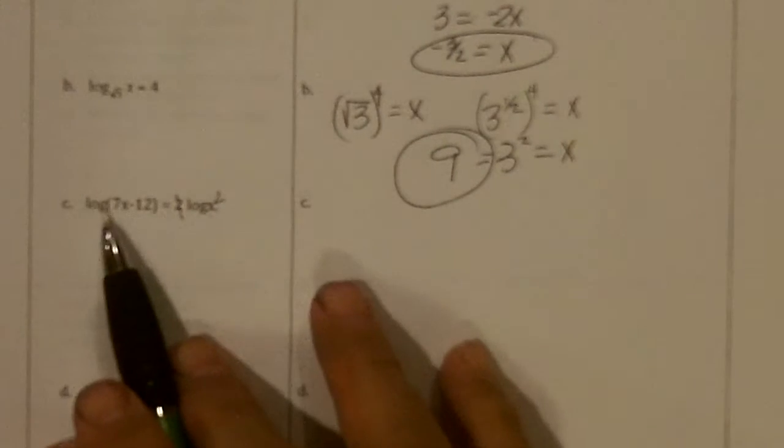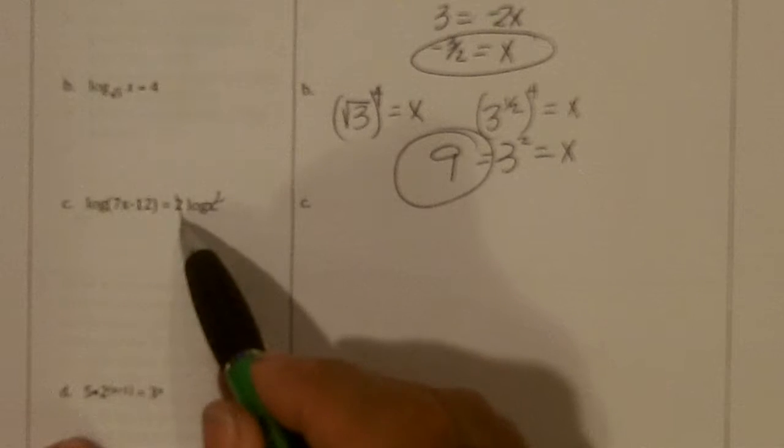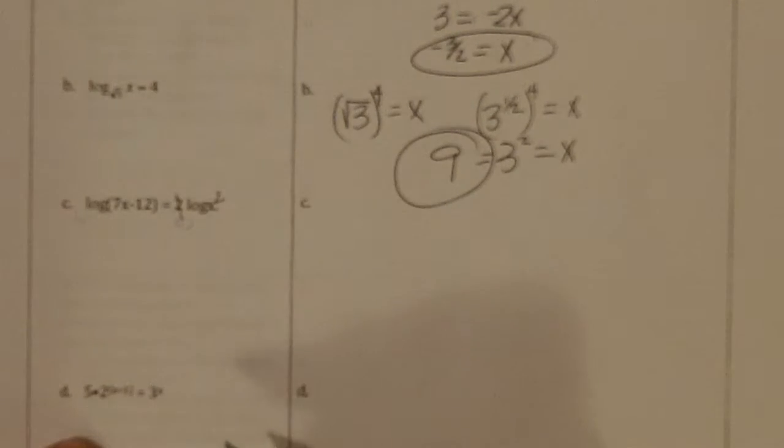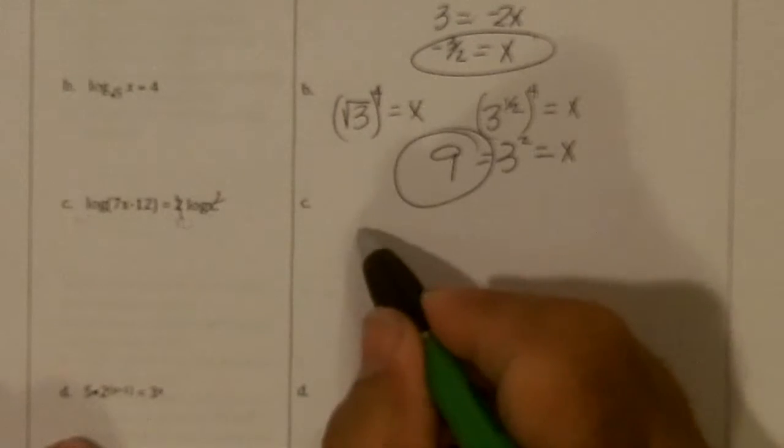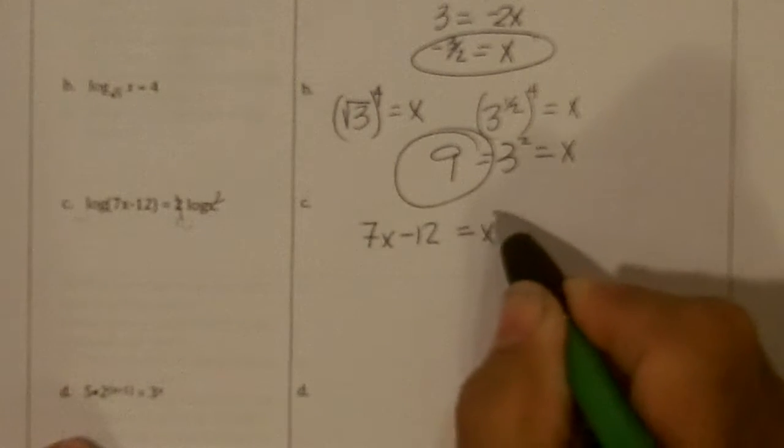And then the log on both sides, so if both sides are equal, I can take 10 to the same power and they would still be equal, and that cancels the logs. And so I get 7x minus 12 equals x squared.